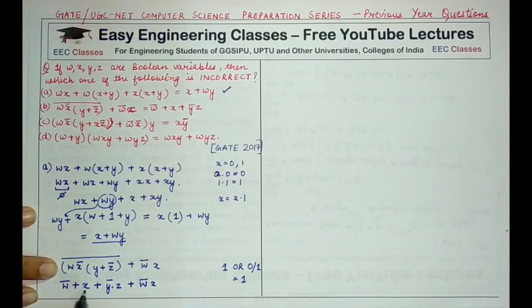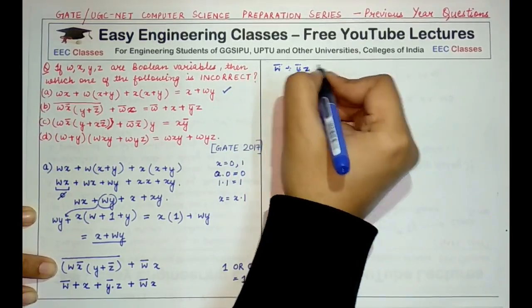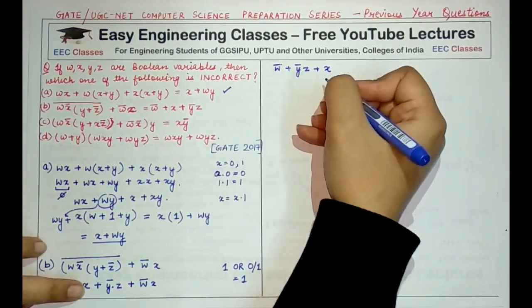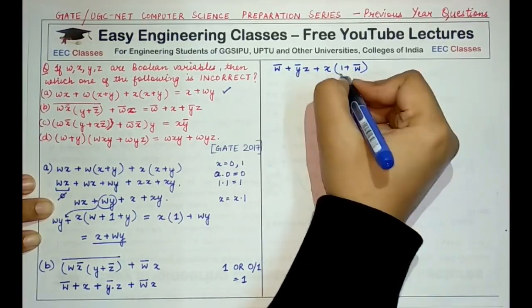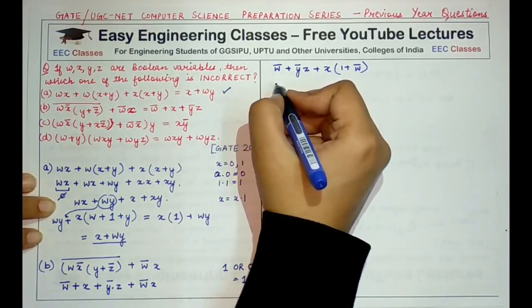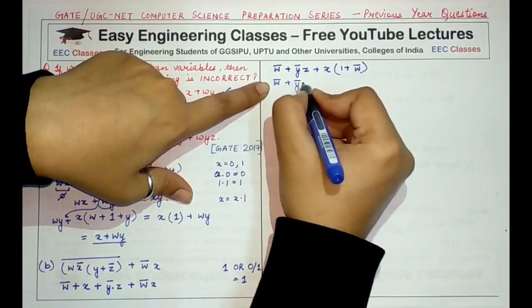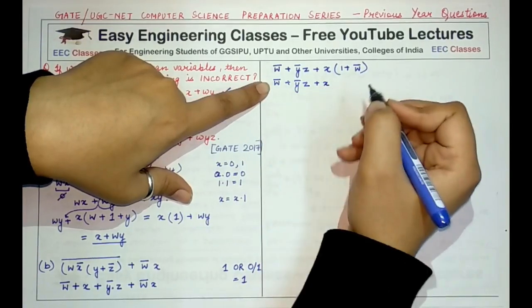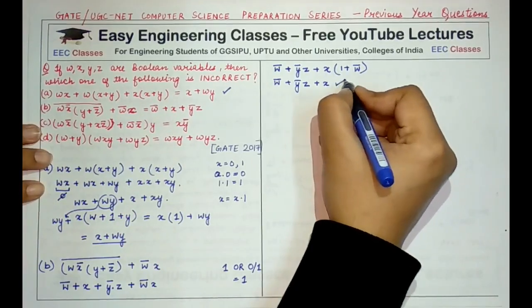This can be reduced to the expression W̄ plus ȲZ plus X. Taking X as common from the second and the last term, I write it as one plus W̄. Again, following this property that OR with one gives one, then this would be reduced to W̄ plus ȲZ plus X. Let's check what is the right hand side. So yes, this is also correct.